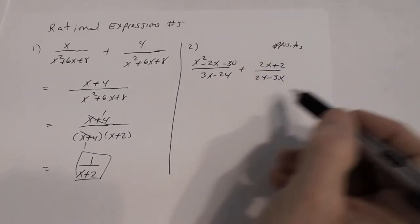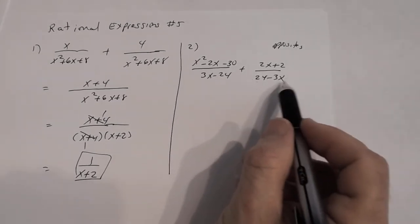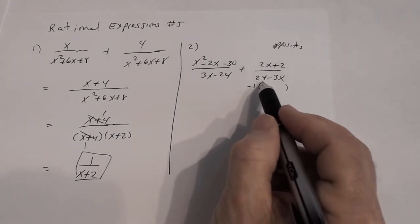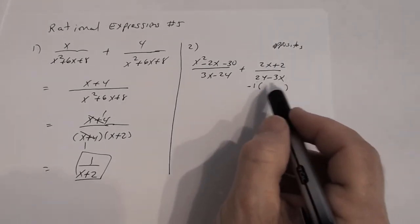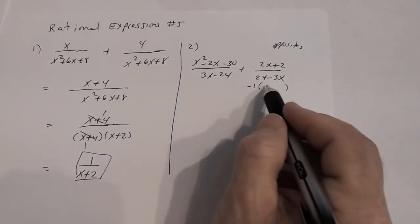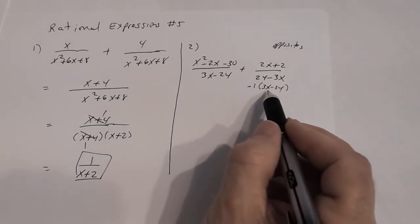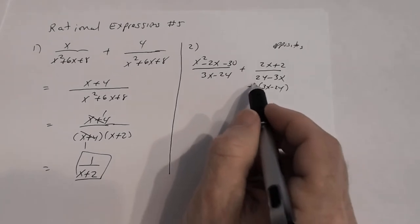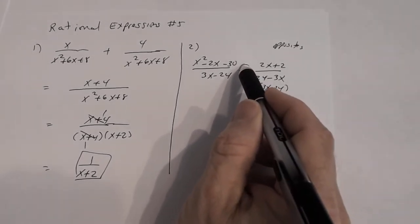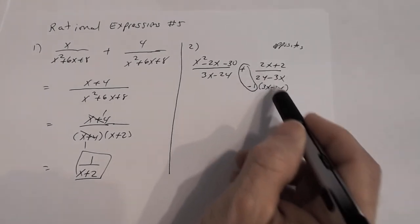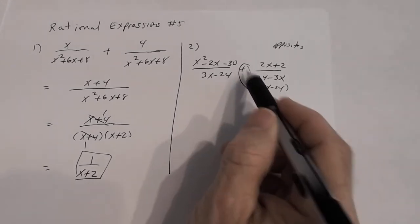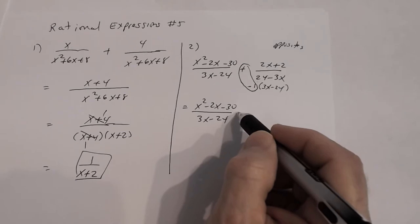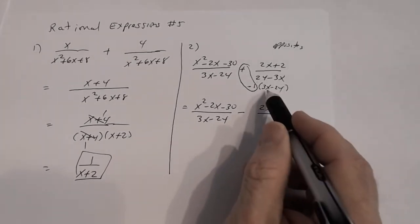When you use the idea of opposites, it doesn't matter which one you use, but let's use that second denominator. I can factor out a negative 1 from this denominator. Negative 1 times 3x minus 24: negative 1 times 3x is negative 3x, negative 1 times negative 24 is positive 24. So now you're adding the opposite of this rational expression — meaning you're subtracting. This becomes x squared minus 2x minus 30 divided by 3x minus 24, minus 2x plus 2 divided by 3x minus 24. Now the denominators are the same.